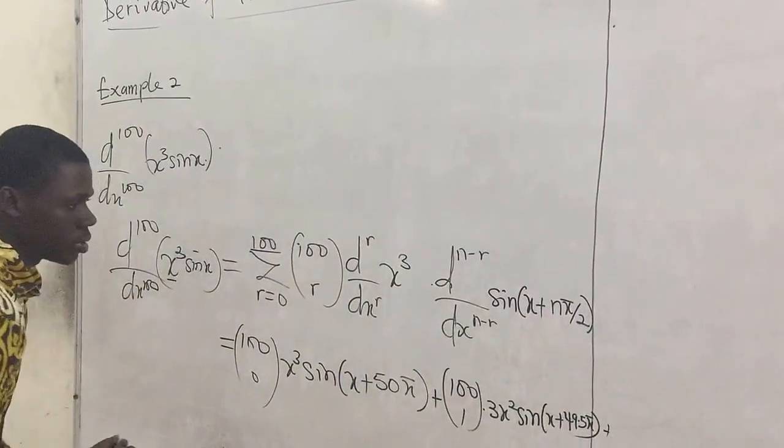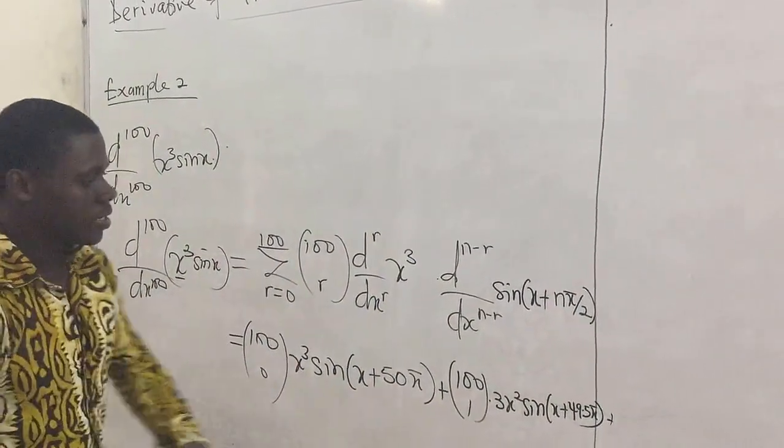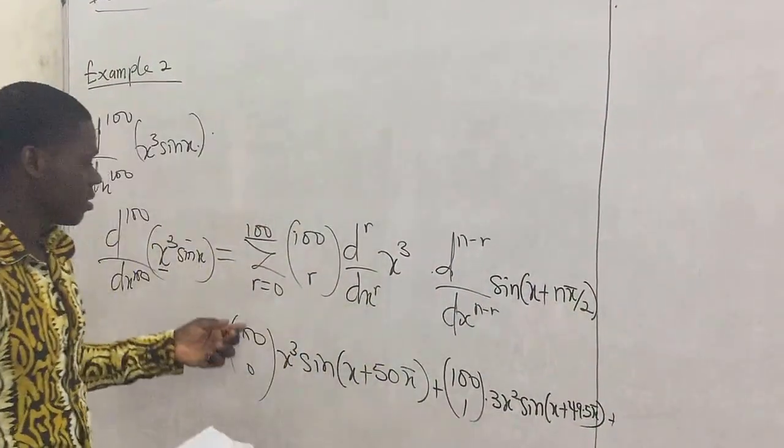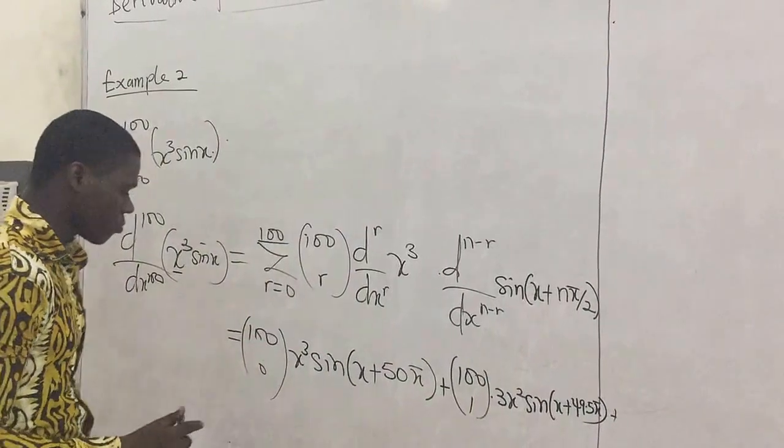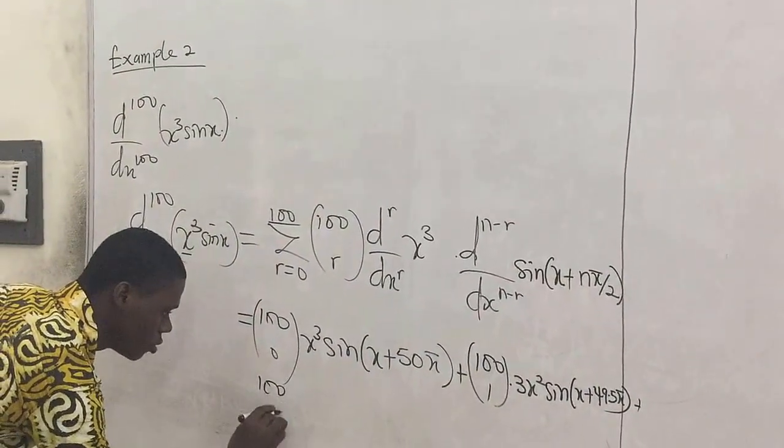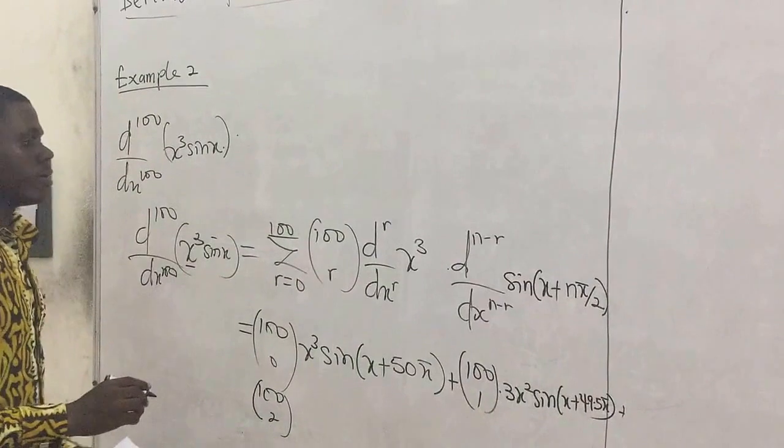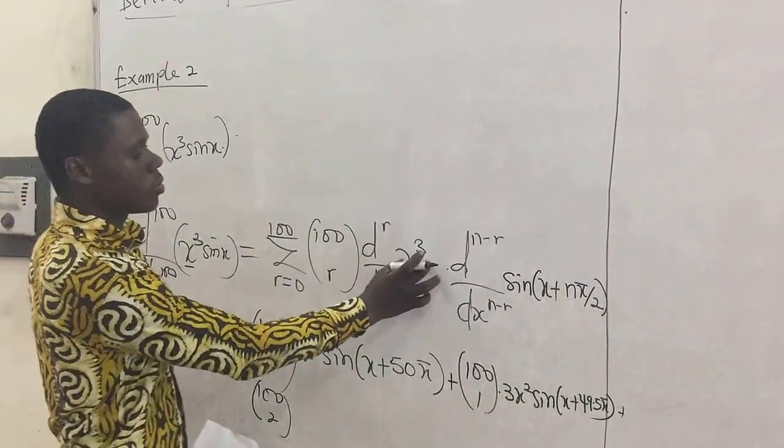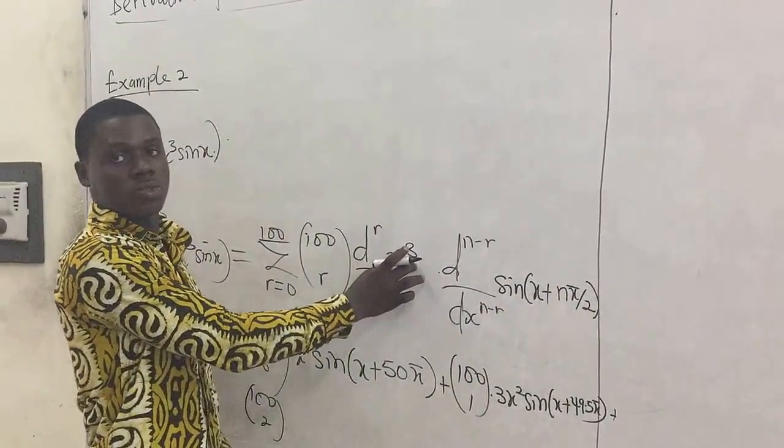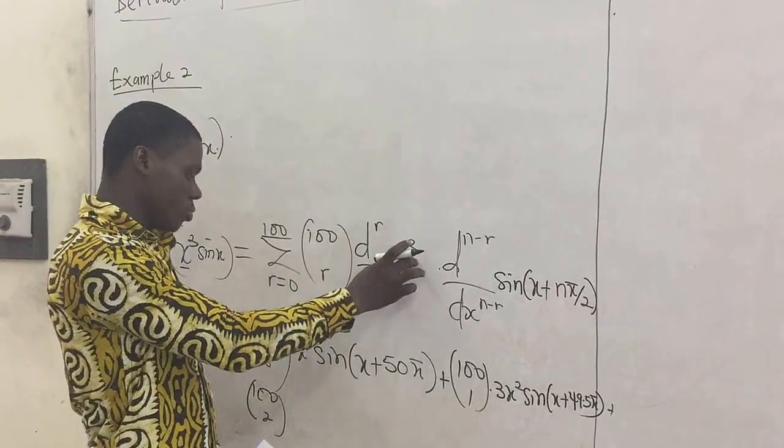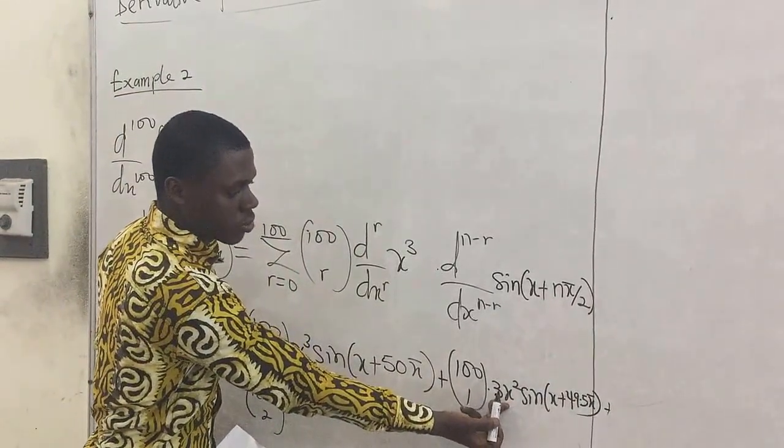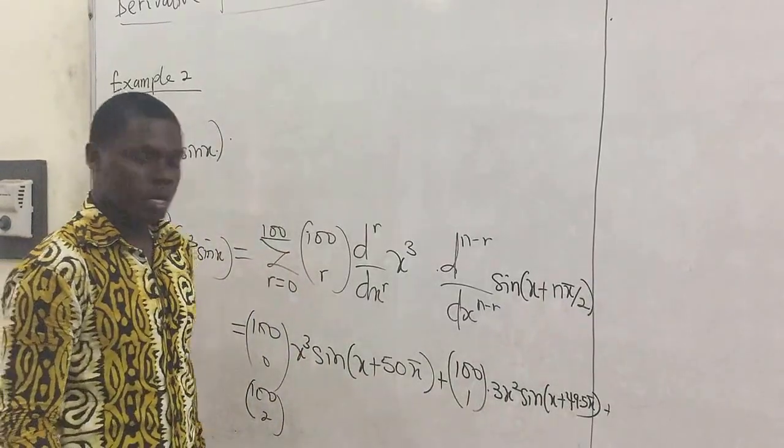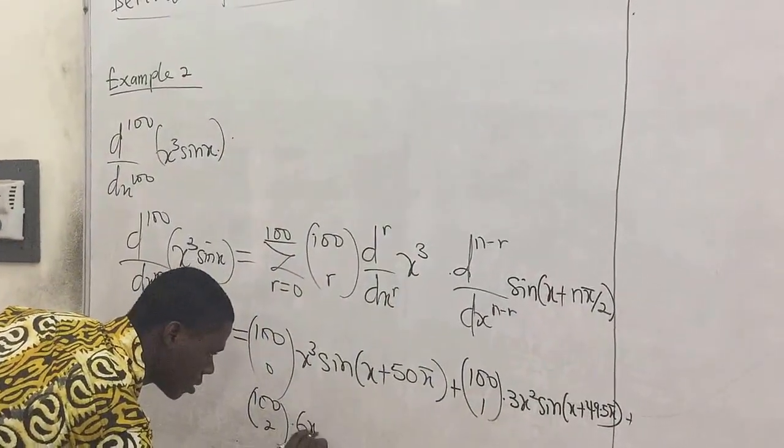So let's continue, that's just the second, so let's move to the third. So r is now 2. It means that we're going to have 100 combination 2, and this place is 2, which means that we'll differentiate this particular function twice. Differentiating it once gives us this, if we continue the derivative once more, it'll give us 6x, so multiply by 6x.